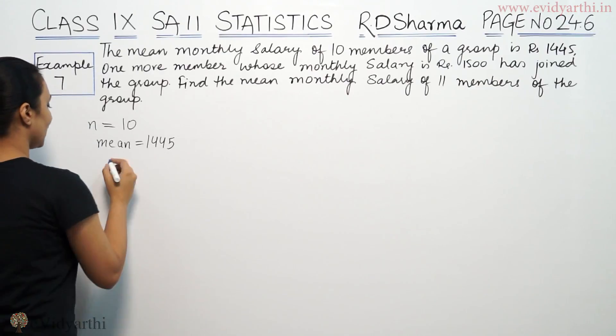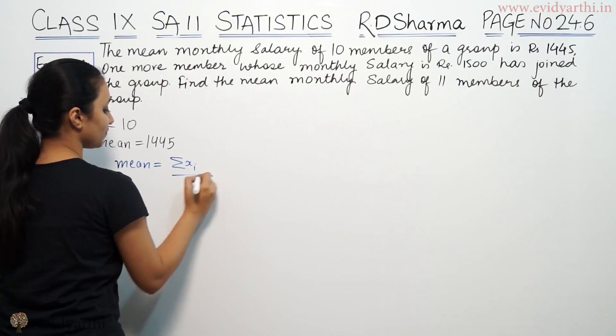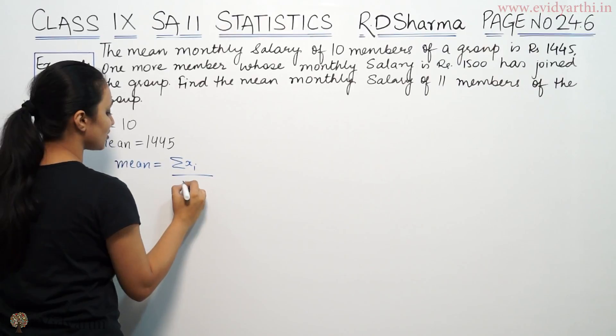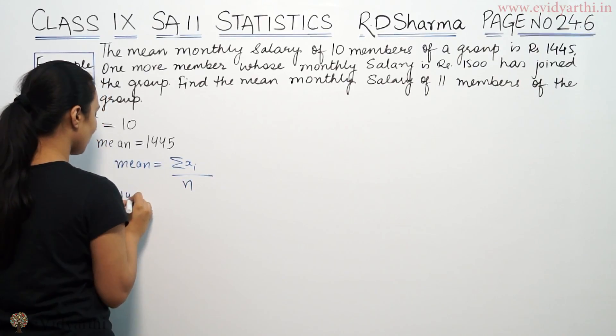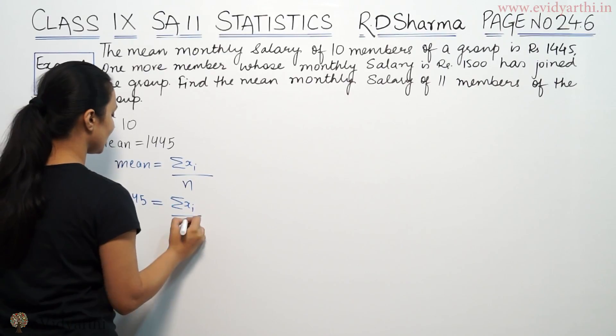The mean is 1445. Sum Xi means total of that monthly salary upon number of members, so this will be mean equals 1445 equals sum Xi by 10.